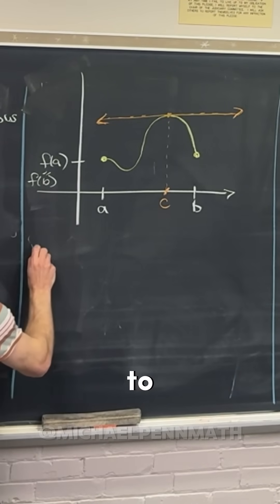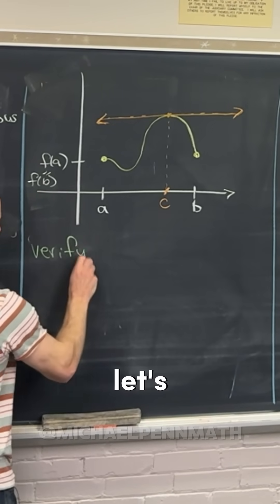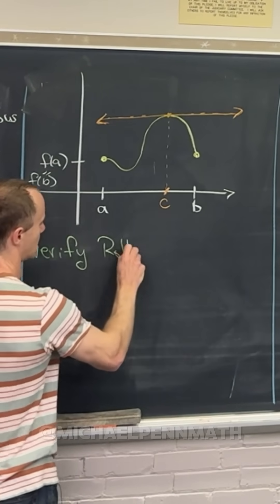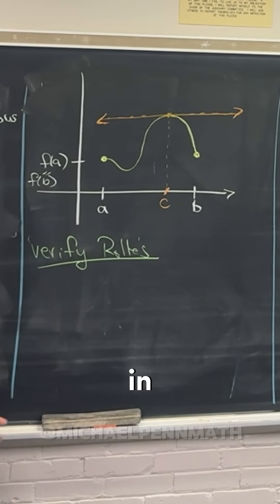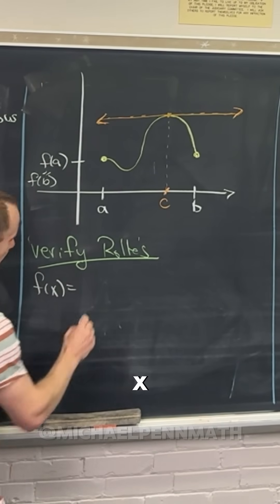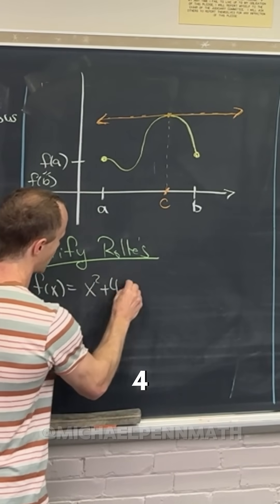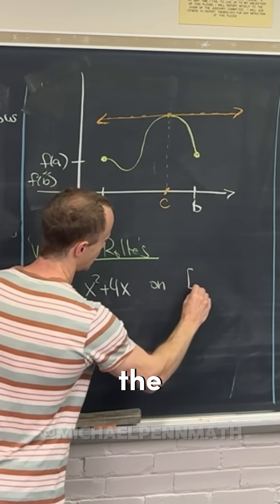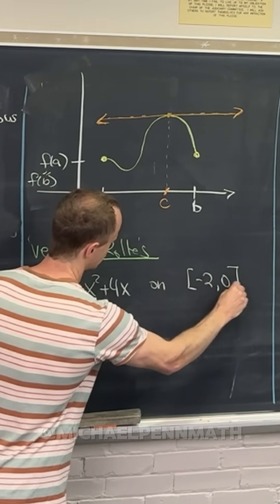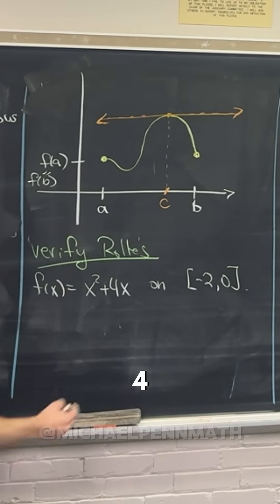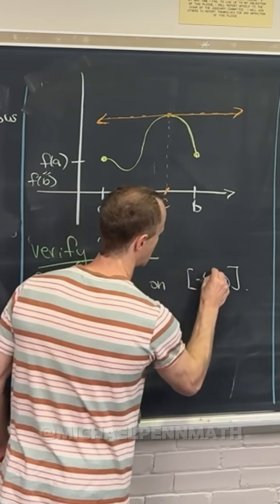So let's say we wanted to do this. Let's verify Rolle's theorem in a couple of settings. So let's say we have f of x equals x squared plus 4x on the interval from negative four to zero.